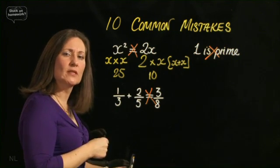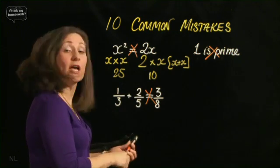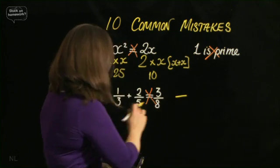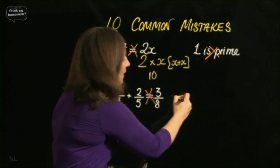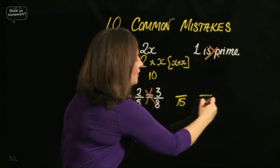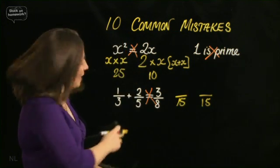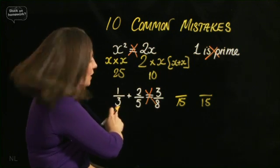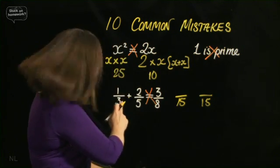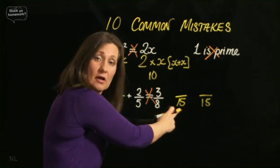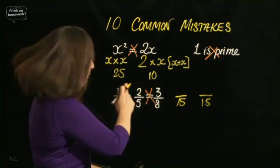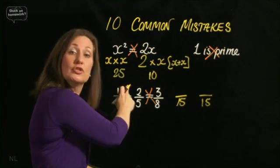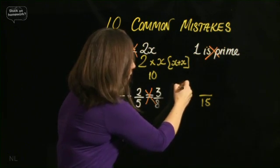Now what have I done with that 3 to go to 15? I've multiplied it by 5. So what must I do to the top? I also times it by 5. What you do to the bottom, you do to the top. 1 times 5 is 5.